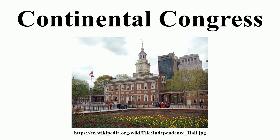Confederation Congress, 1781–1789. The newly founded country of the United States next had to create a new government to replace the British Parliament that it was in rebellion against. After much debate, the Americans adopted the Articles of Confederation, establishing a national government made up of a one-house legislature known as the Congress of the Confederation, which met from 1781 to 1789. The Confederation Congress helped guide the United States through the final stages of the Revolutionary War, but during peacetime the Continental Congress steeply declined in importance.